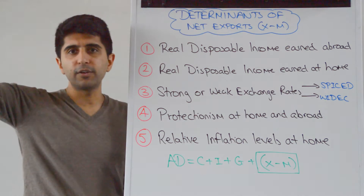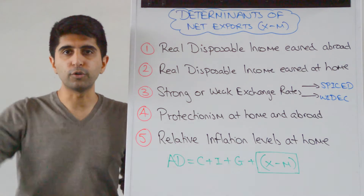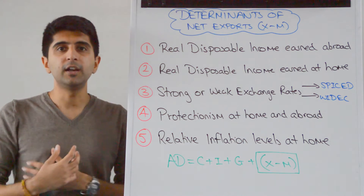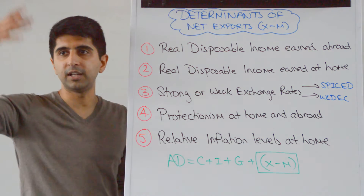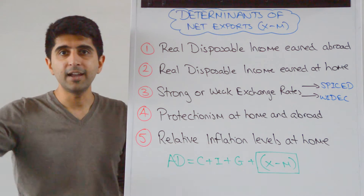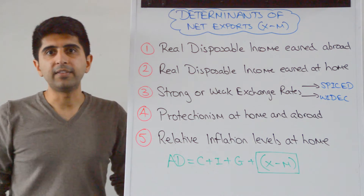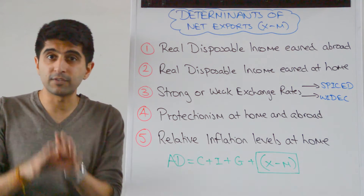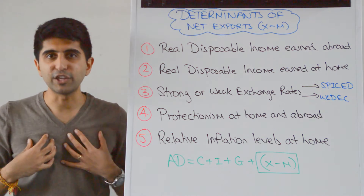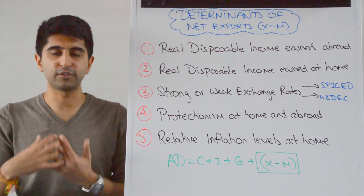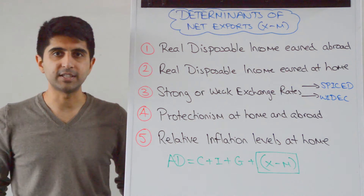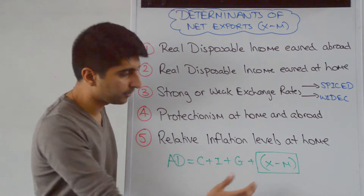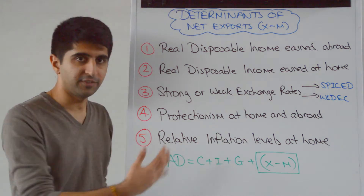Vice versa, if there is a recession abroad, especially in the countries of our major trading partners — so take the UK, that could be a recession in the USA, a recession in Germany — then the marginal propensity for those countries to import is going to reduce. Therefore the demand for UK exports is going to reduce, the revenues generated from UK exports will reduce, reducing X minus M, shifting AD left.